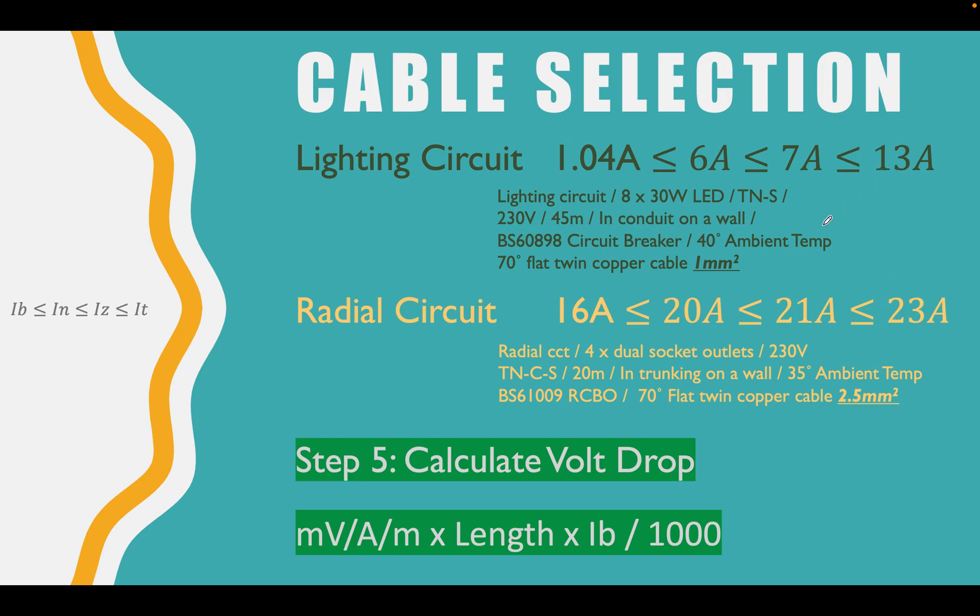Quick example of that, just so we understand what we've done. We selected a 1mm cable for our lighting circuit because we needed to select a cable that could take at least 7 amps, which we did. We went in that table and we selected 1mm, because 1mm could take 13 amps. So that's the tabulated value, 13 amps.